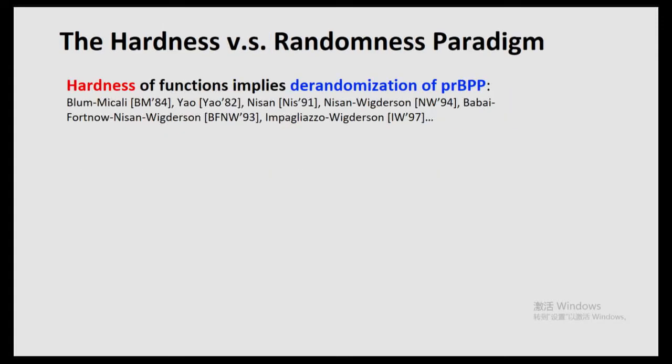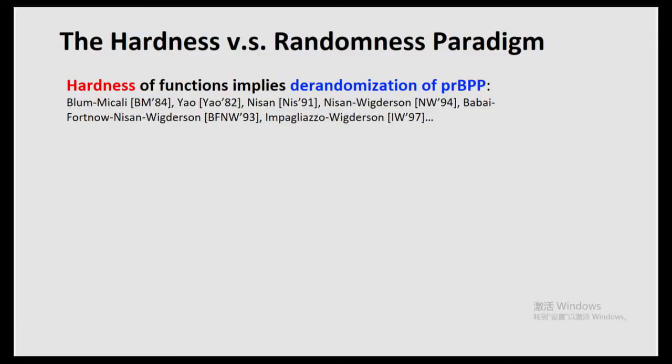As we know from yesterday, the celebrated hardness versus randomness paradigm basically tells us that if we assume hardness of functions, then we get derandomization of BPP. This is a very elegant result and is a consequence of a beautiful line of research including Blum-Micali, Yao-Nisan-Wigderson, and Babai-Fortnow-Nisan-Wigderson. In particular, Impagliazzo-Wigderson 1997 showed that if the complexity class E, which equals deterministic time 2^{O(n)}, requires nearly exponential circuit size, then BPP equals P.